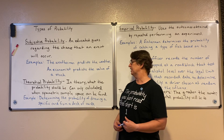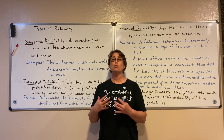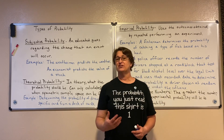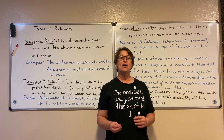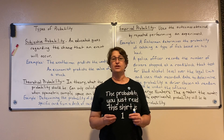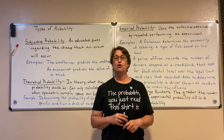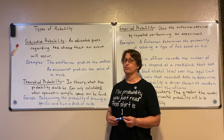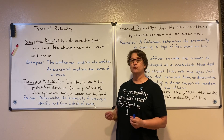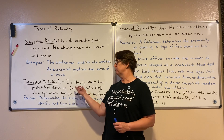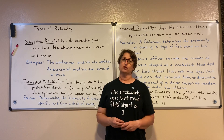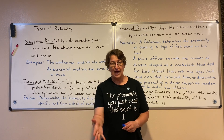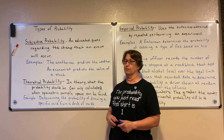Theoretical probability is the probability in theory — what should happen in theory. But in order to determine the theoretical probability, we must be able to find the symmetric sample space for an experiment. This is what we've been dealing with when we spin the spinner or roll a die — we're able to look at that theoretical probability.